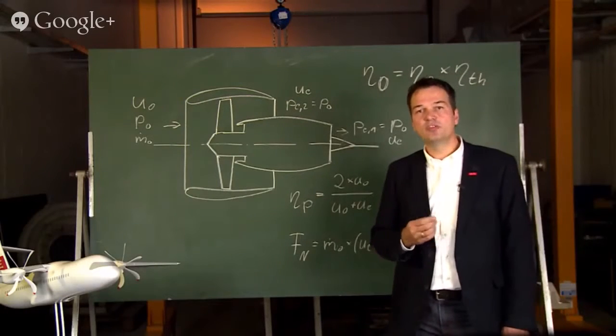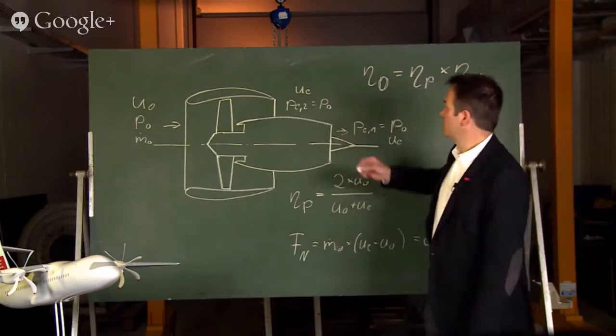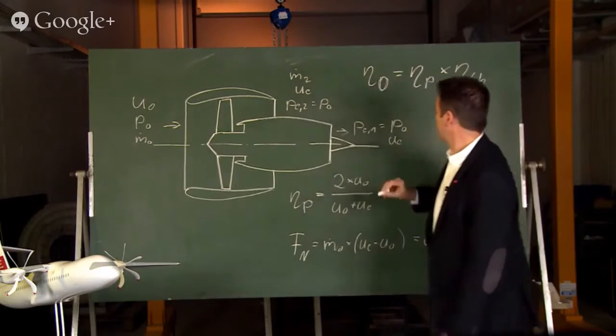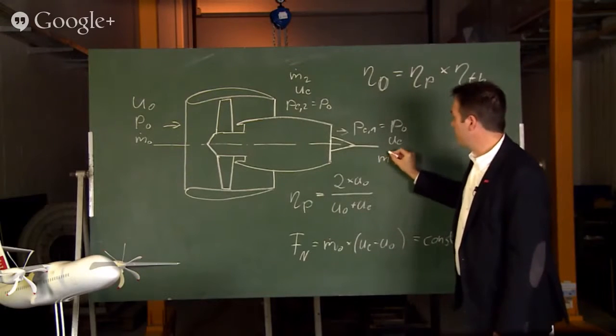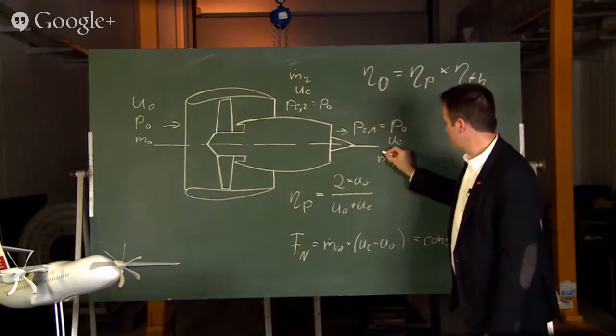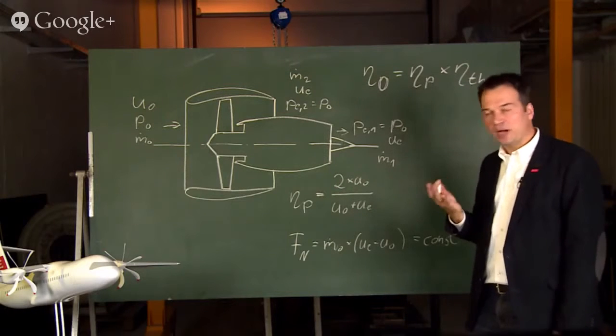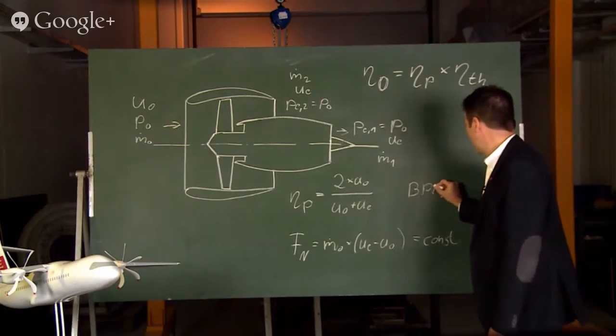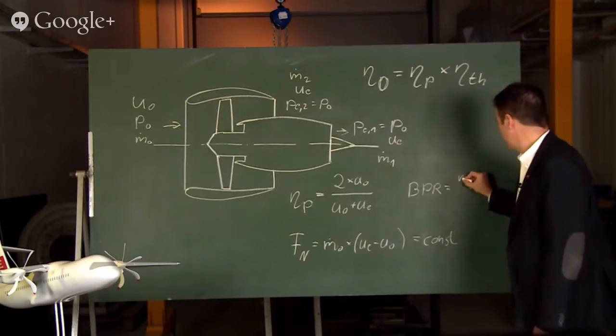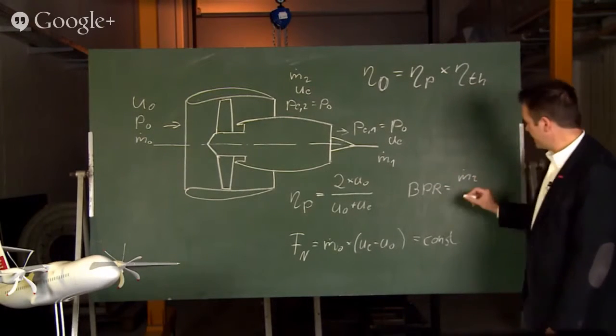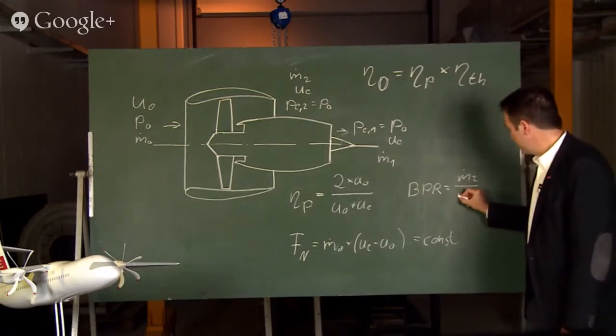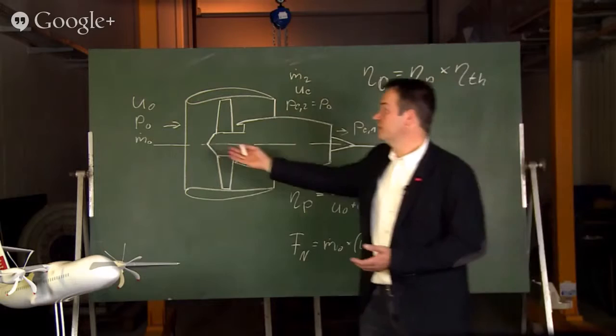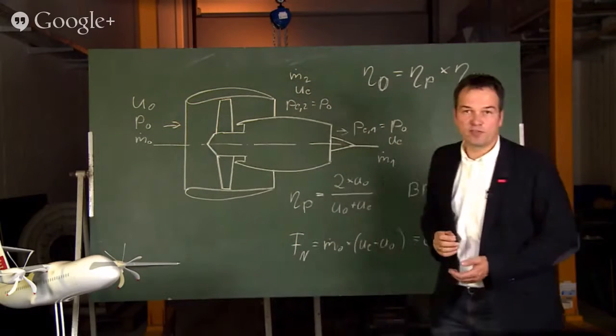The ratio of both mass flows, the secondary mass flow and the primary mass flow, this ratio is defined as the bypass ratio. It's the secondary mass flow divided by the primary mass flow and the sum of both is of course the total mass flow.